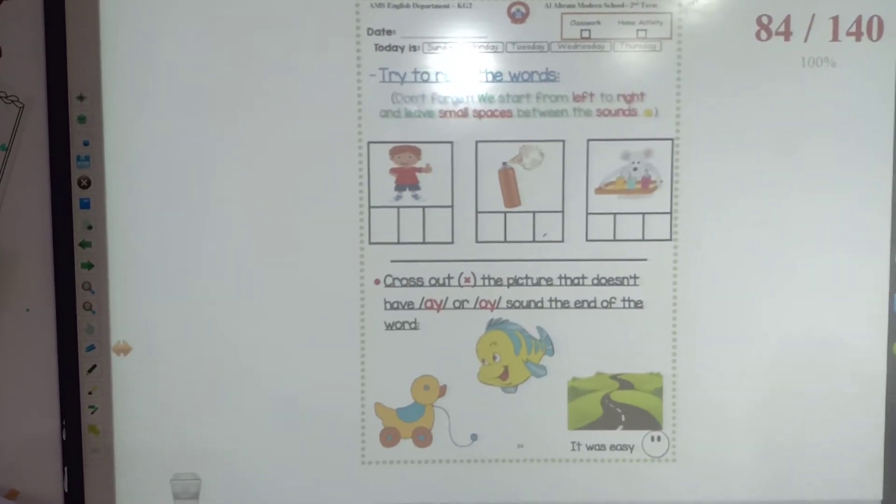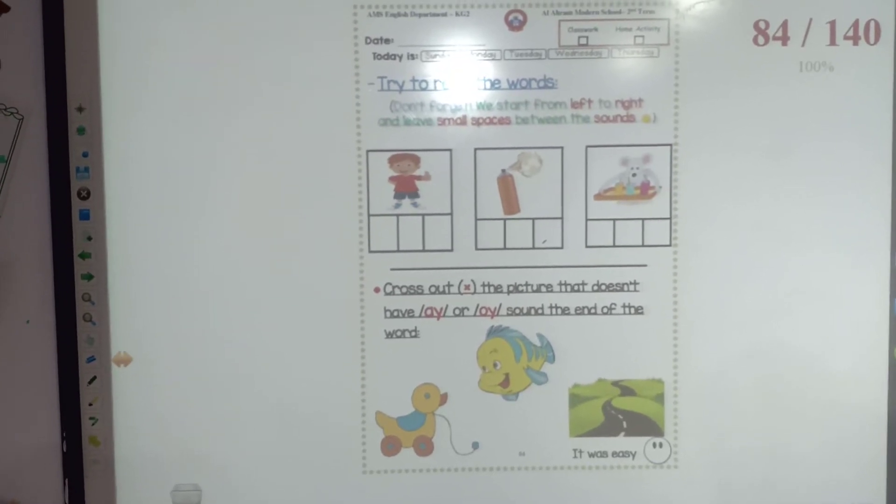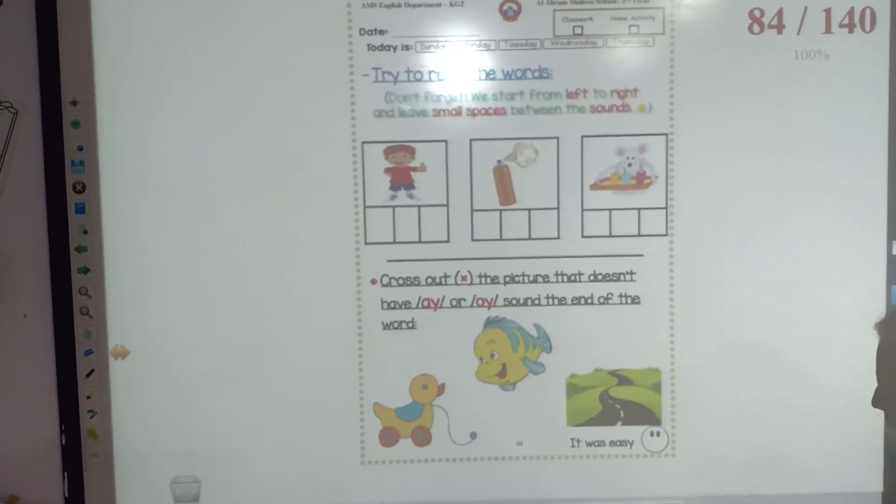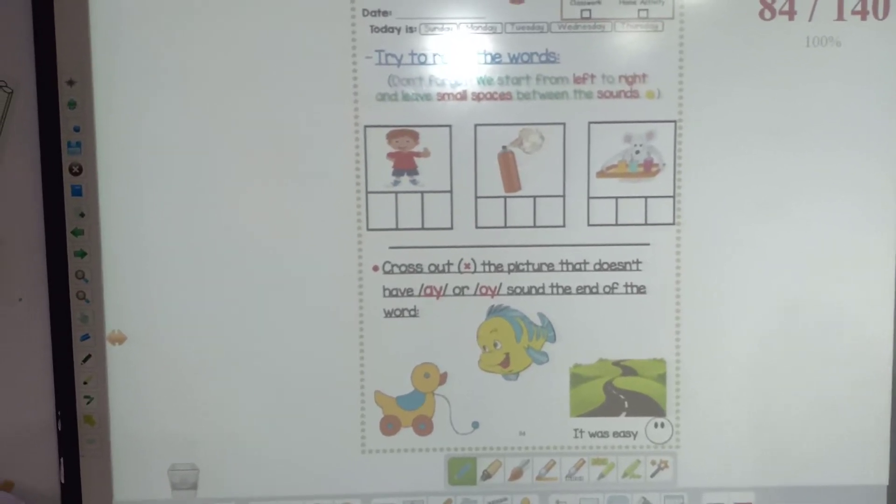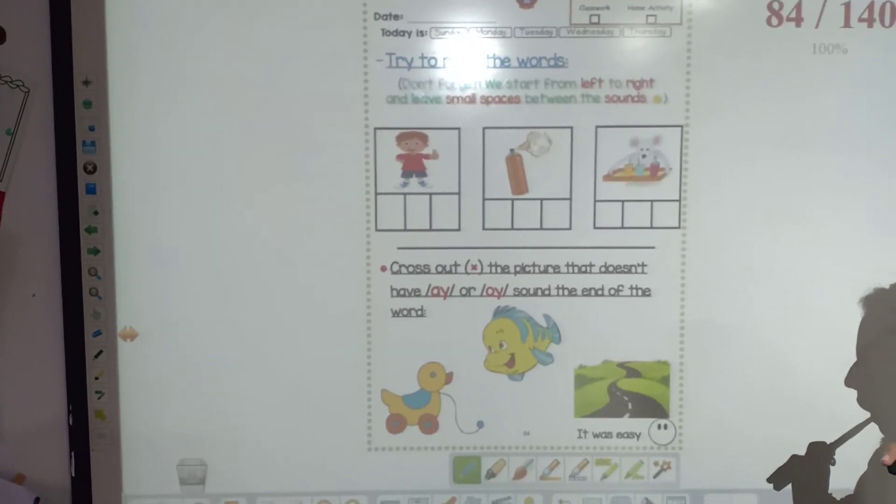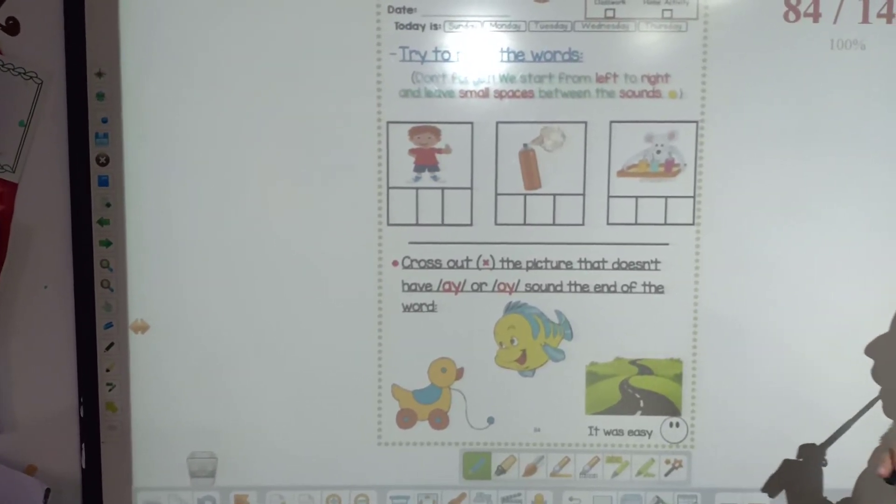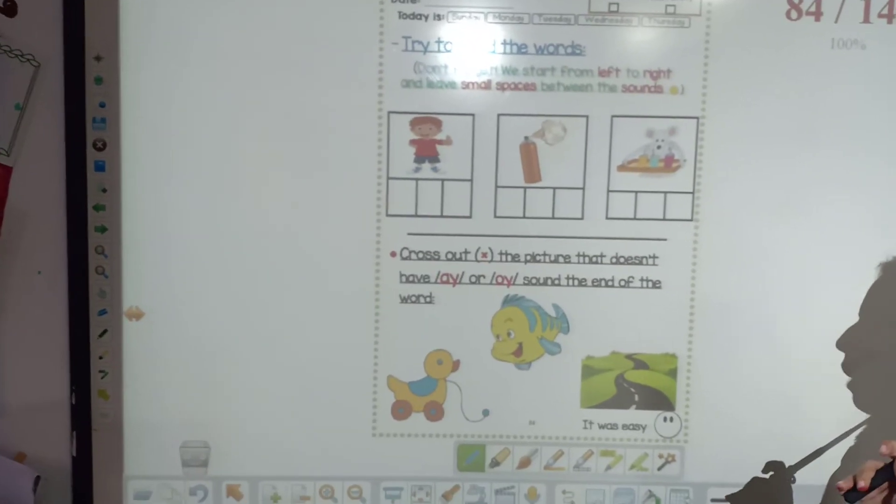The next page, page 84 is homework. You are going to solve it alone at home. But, I am going to help you to show you how you solve it. Now, look at each picture and check where can you hear the sound of oy or ay.